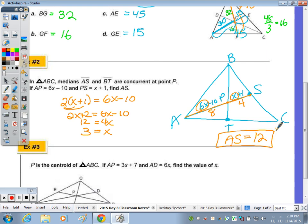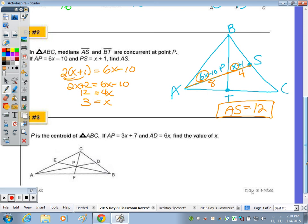And number 3, they give you the picture. So go ahead and label appropriately. We'll see what equation we could write here. P is the centroid of ABC. A to P is 3X plus 7, so the longer segment. So 3X plus 7, and A to D, the whole length is 6X. We're not given PD. Anyone have an idea here what we would do?